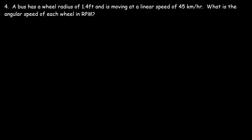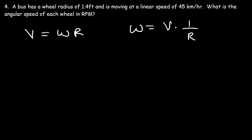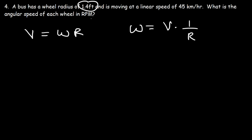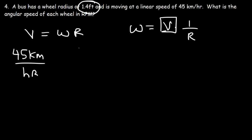Example 4: A bus has a wheel radius of 1.4 feet and is moving at a linear speed of 45 kilometers per hour. What is the angular speed of each wheel in RPM? We have v = omega × r, so omega = v ÷ r. We can't divide yet because units don't match. Start with 45 kilometers per hour and convert: 1,000 meters per kilometer, then 3.281 feet per meter.